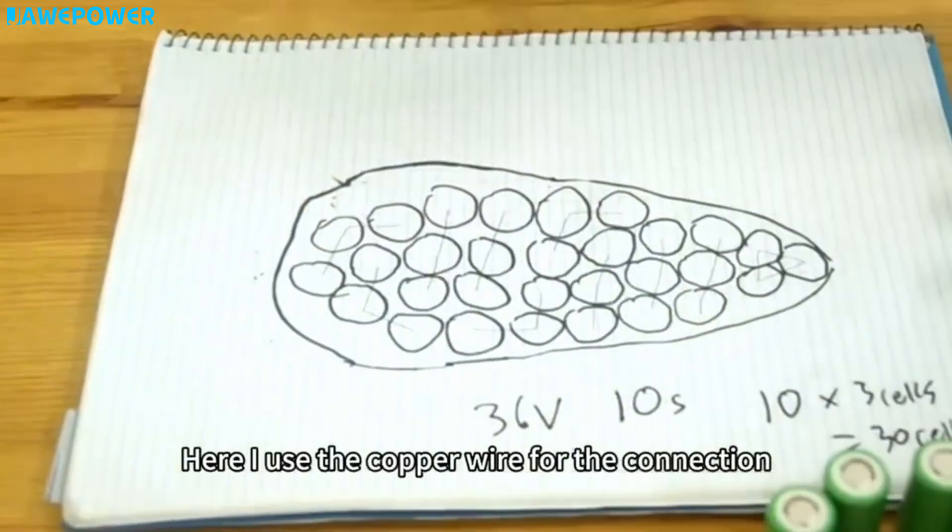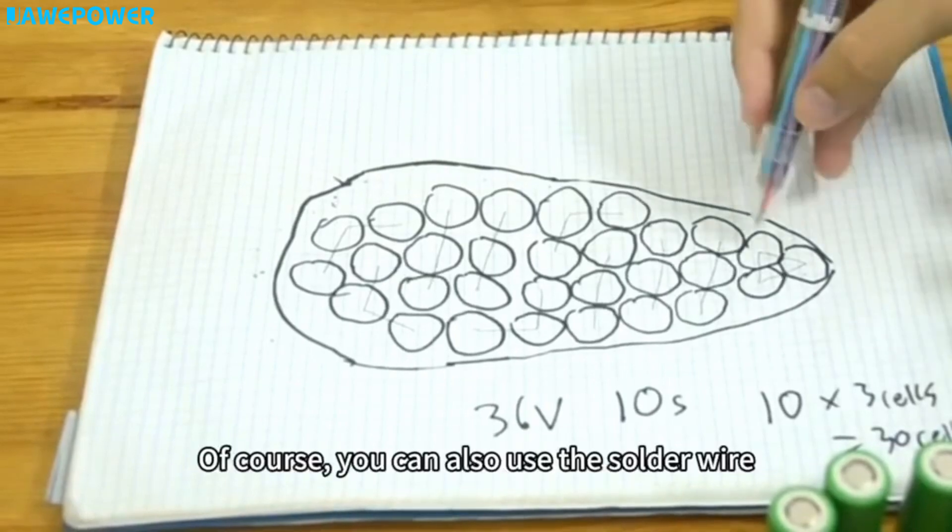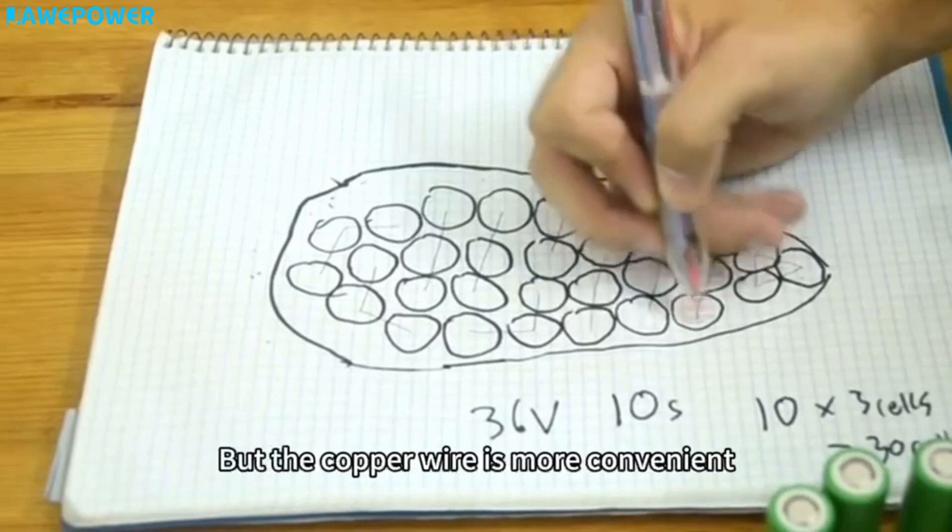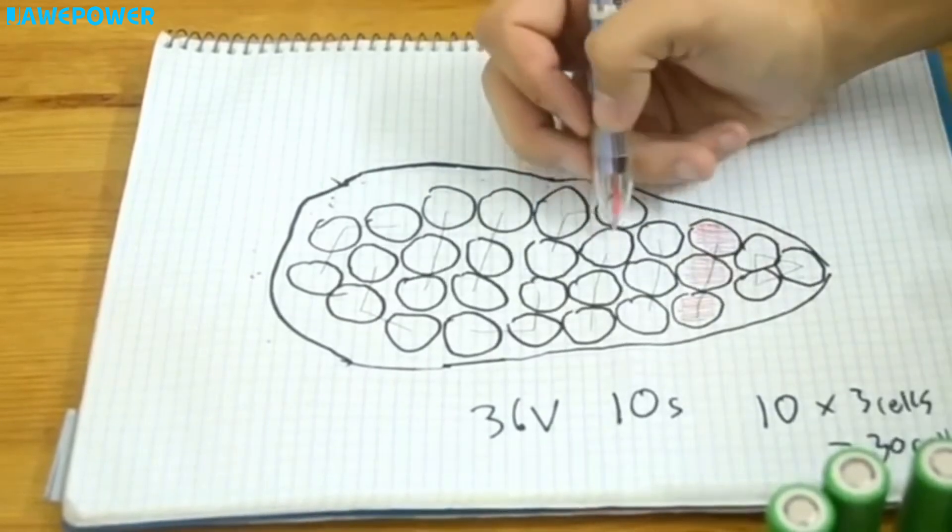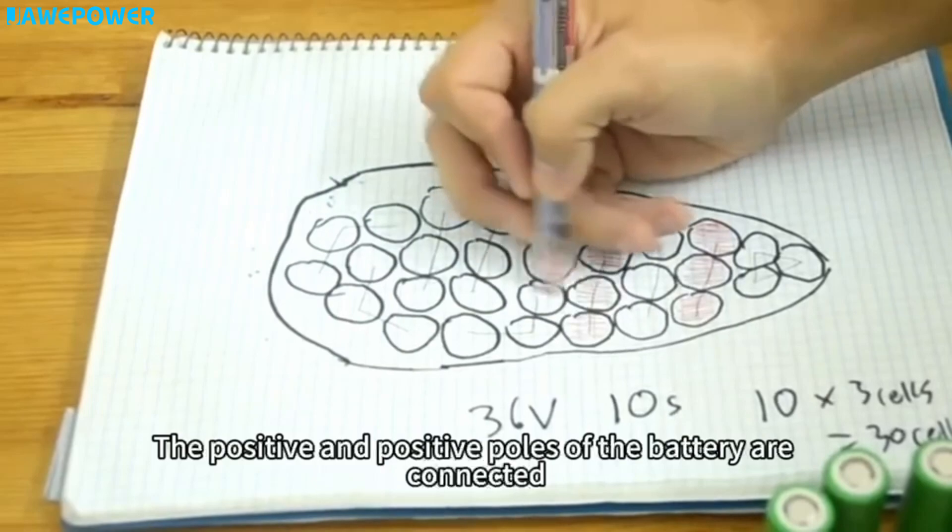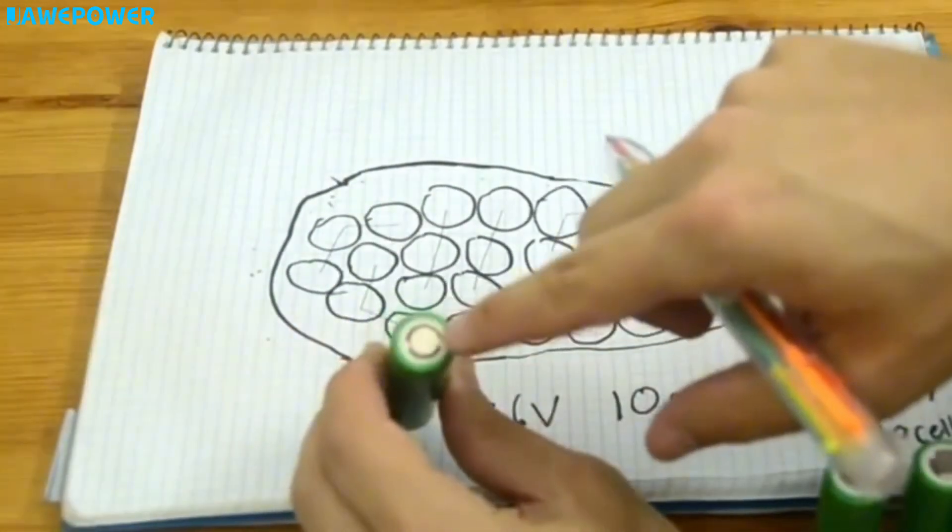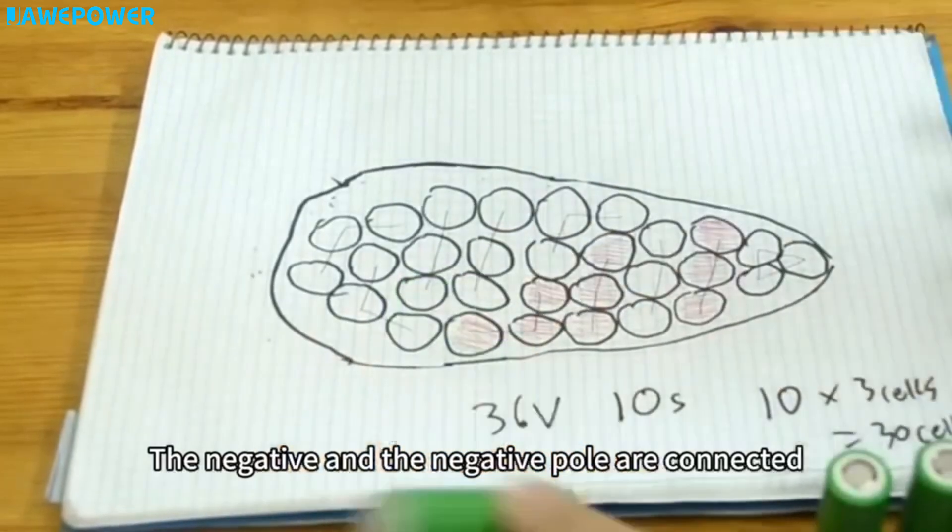Here, I use copper wire for the connection. Of course, you can also use solder wire, but copper wire is more convenient. It should be noted here: the positive and positive poles of the battery are connected, the negative and the negative pole are connected.